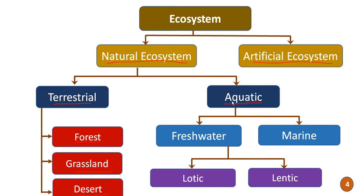In the case of aquatic ecosystems, these are divided into two types: freshwater ecosystems and marine ecosystems. Marine ecosystems include oceans and seas. Freshwater ecosystems are again divided into two types: lotic and lentic. Lotic ecosystems means running water ecosystems, such as rivers and streams, while lentic means standing water, such as ponds and lakes. This is just an overview of ecosystem types.